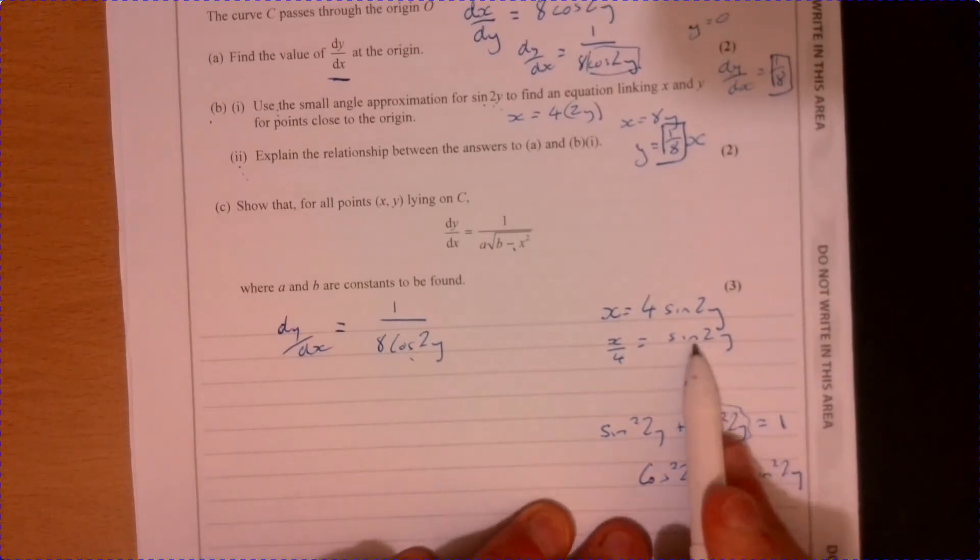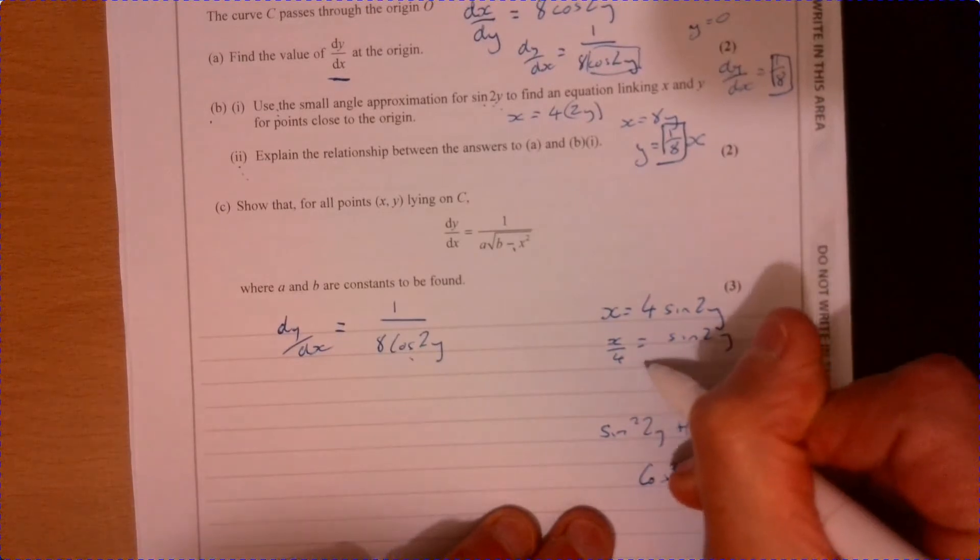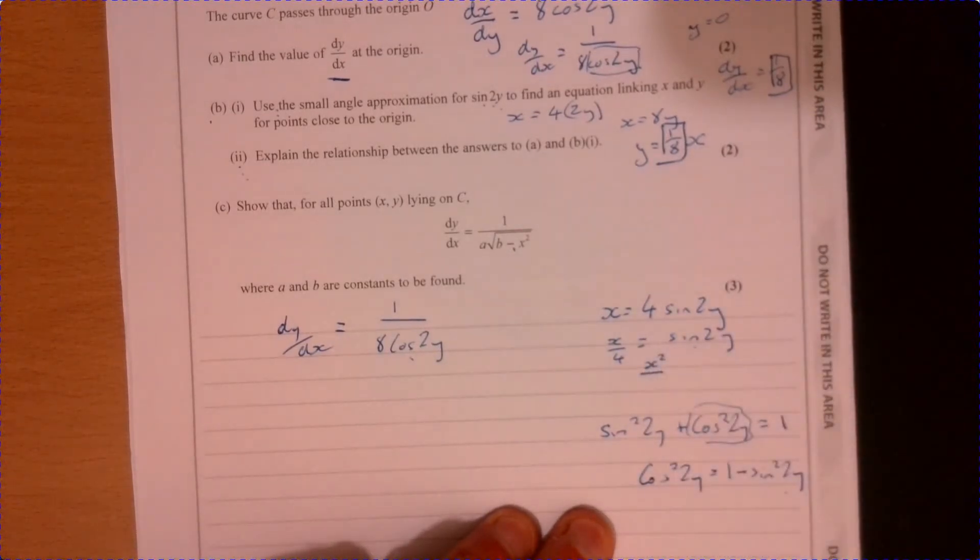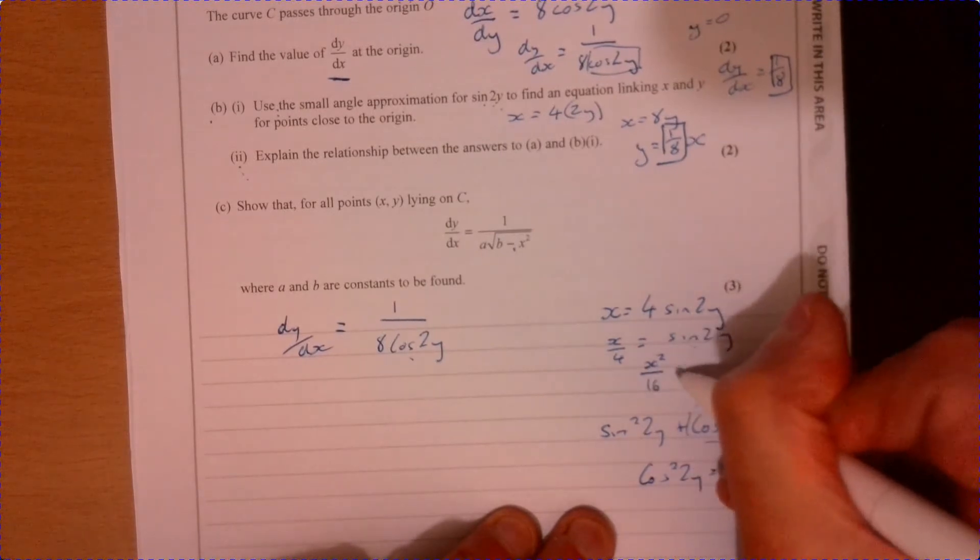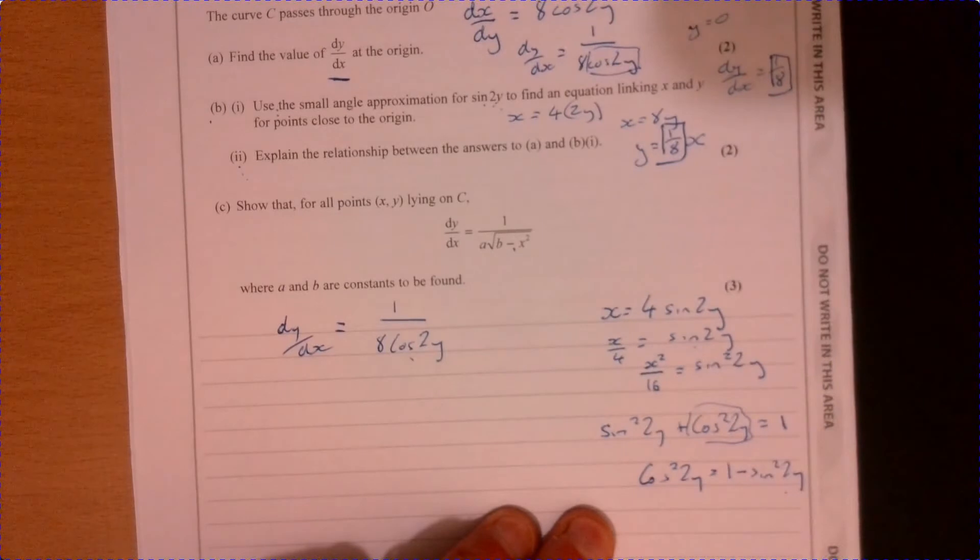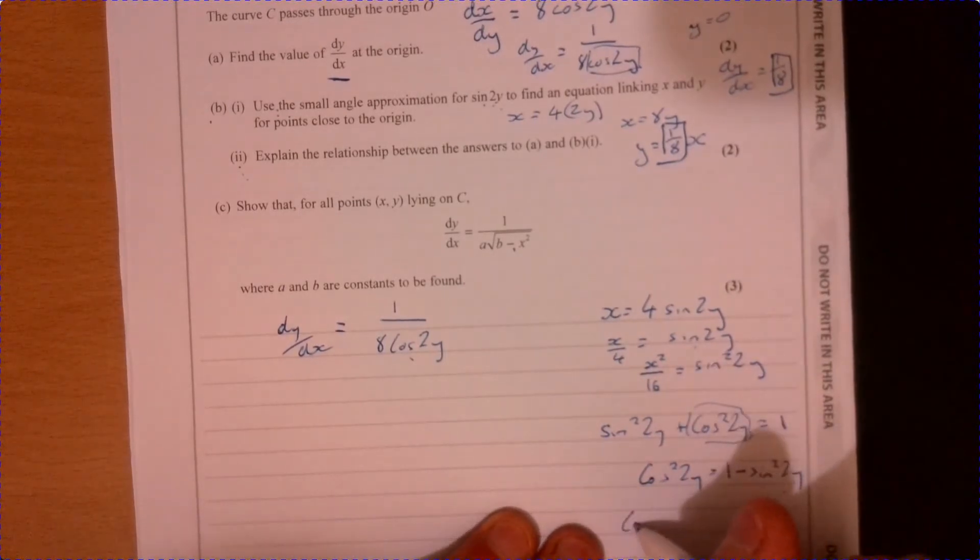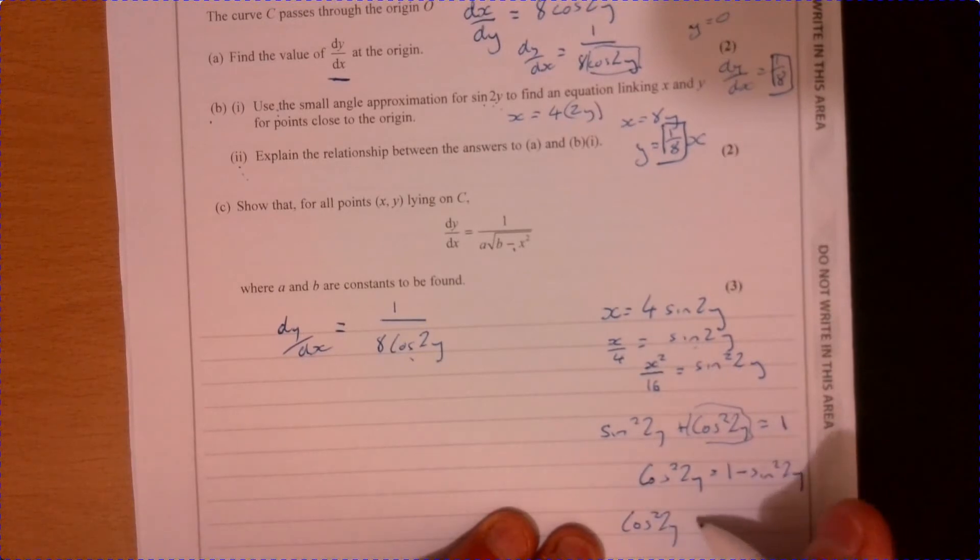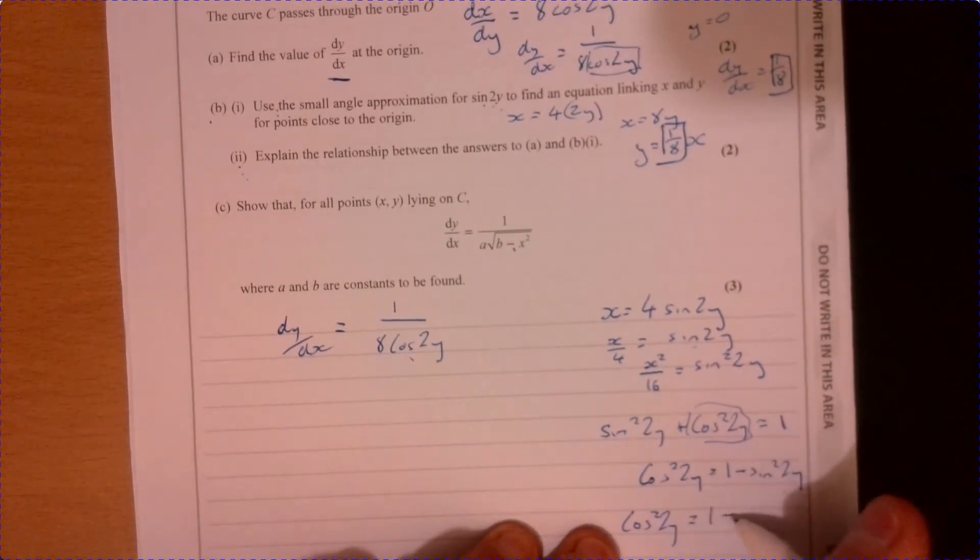So cos squared 2y is 1 minus sine squared 2y. Ah, look at what we just did a second ago here. So if I square both, that's x squared over 16. So that equals sine squared 2y. Let's put this into here. So cos squared 2y equals 1 minus x squared over 16.